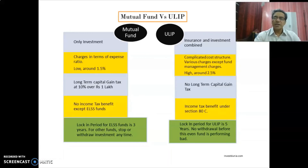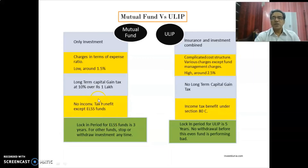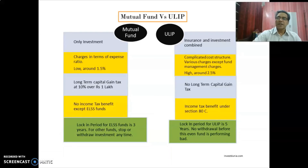The tax amount applies on gains above one lakh. For insurance policies, the maturity amount is tax-free and the exemption is tax-free. Under Section 80C, both ULIP and ELSS mutual fund schemes offer tax benefits, and ELSS specifically qualifies as a tax-linked scheme under Section 80C.